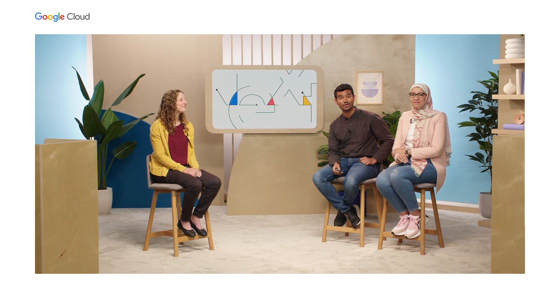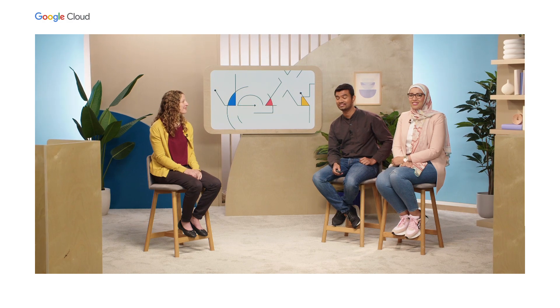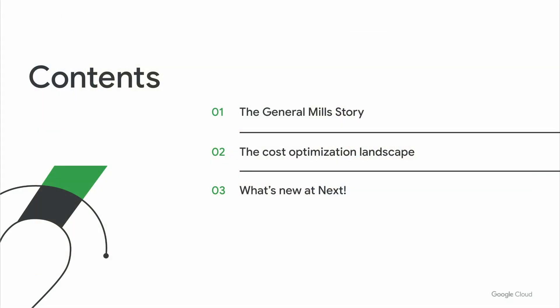Joining me here is Yasmeen, who is product lead for cost optimization on Google Cloud Compute Services, and Courtney, who leads Cloud FinOps at General Mills. We have a packed agenda today to talk about real-world stories on how General Mills approached the discipline of cost savings and accelerated their adoption of Cloud FinOps. We will touch upon the broader landscape and top ways other cloud customers are optimizing their spend, and finally wrap up the session with the newest features and announcements coming out at this Next.